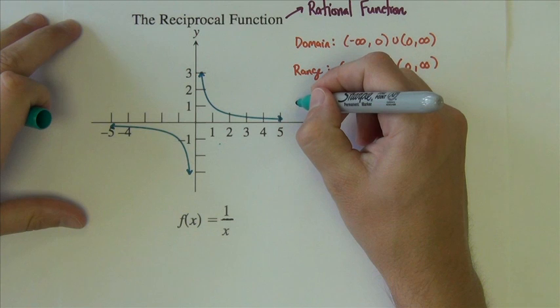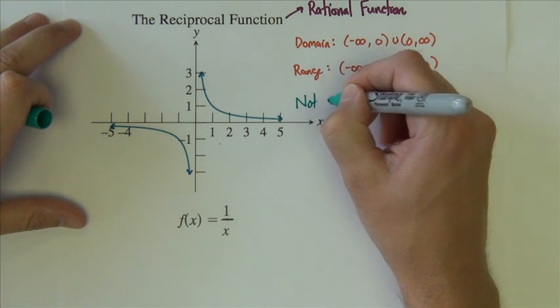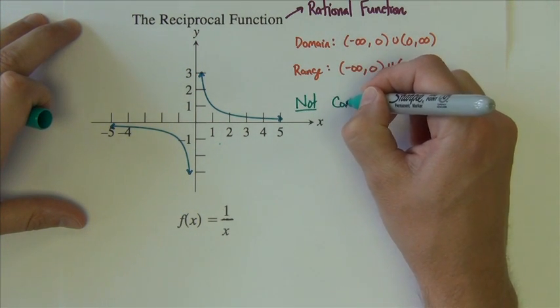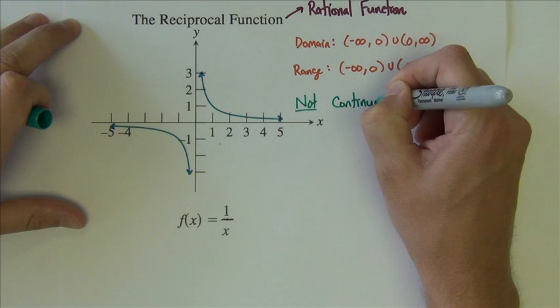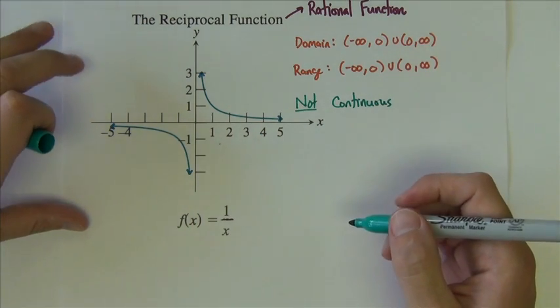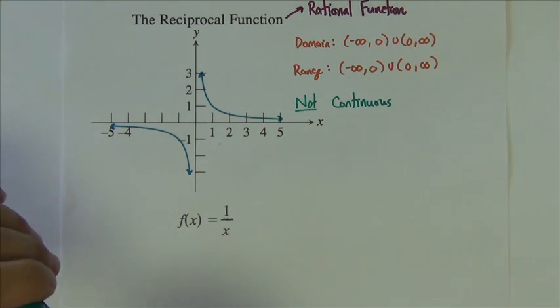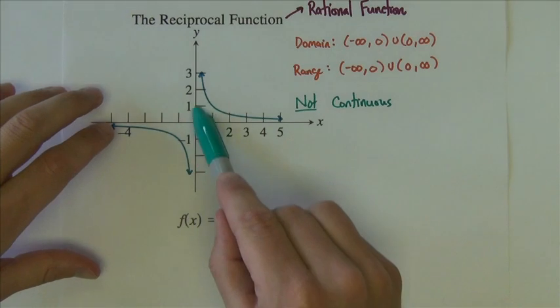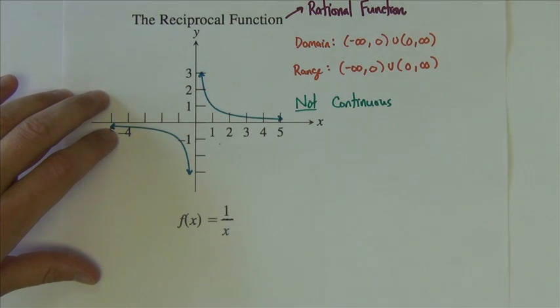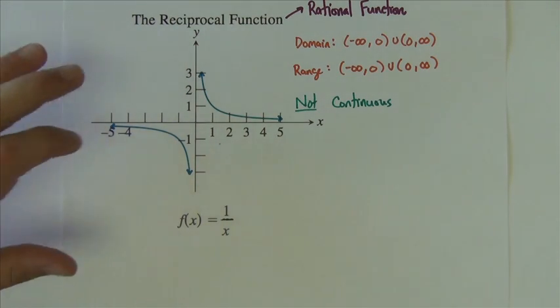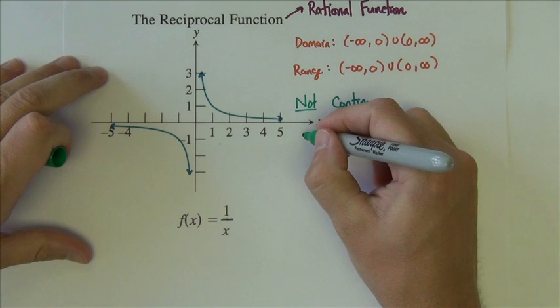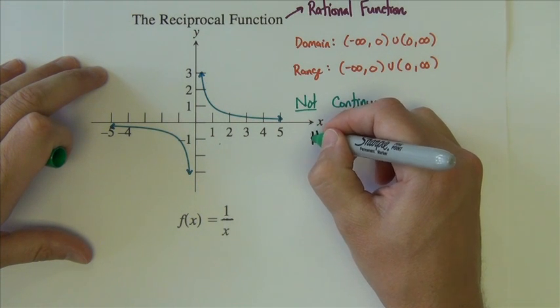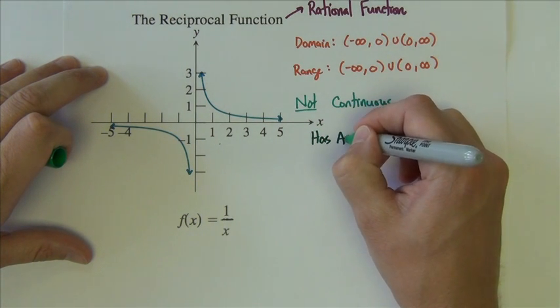The reciprocal function is not continuous. It will have breaks in the continuity, and it always will. There will always be some sort of break. And in fact, let's add to this—kind of related to this—it has asymptotes.